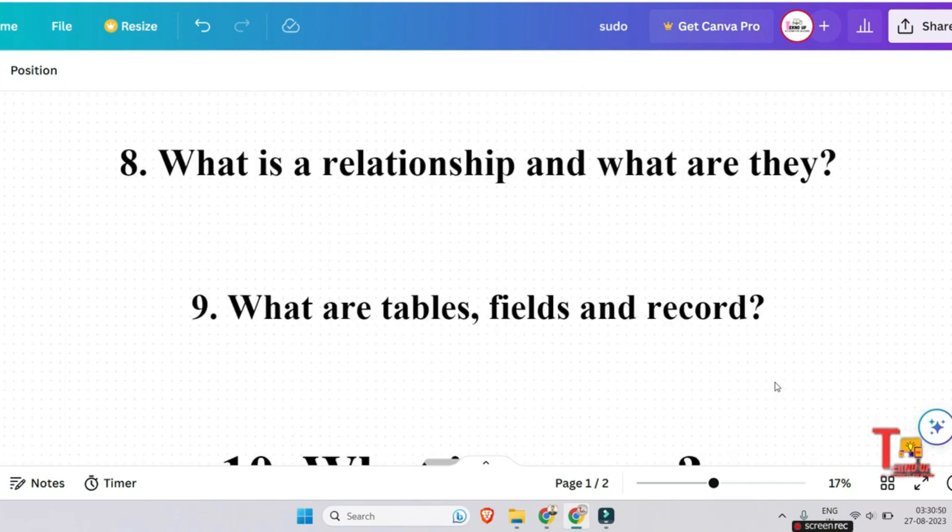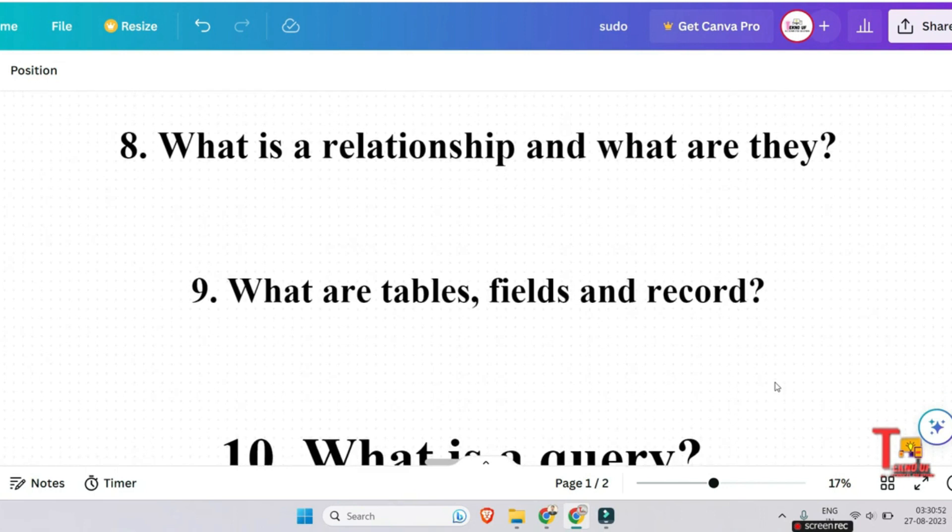The next question or the ninth question is what are the tables, fields, and record? At first, let's define the tables. Actually, data organized in a model with rows and columns is called a table. And what is field in a table? There are a specified number of columns known as field. And the record: there are infinite number of rows, which is called a record.